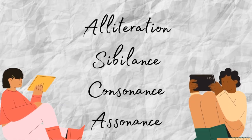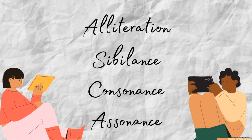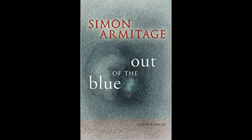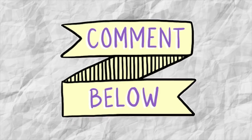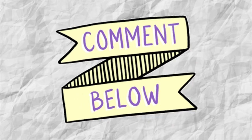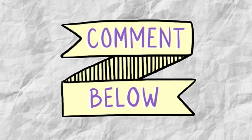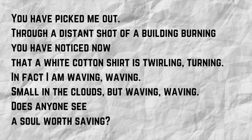Here's an example of all four used by Simon Armitage at the start of 'Out of the Blue.' See if you can spot the four different literary devices.